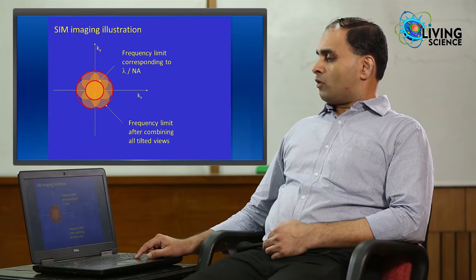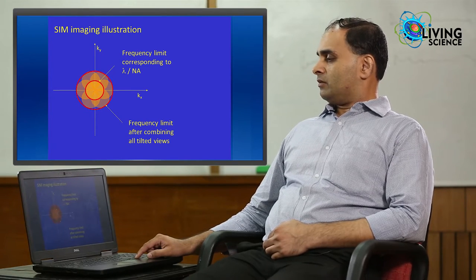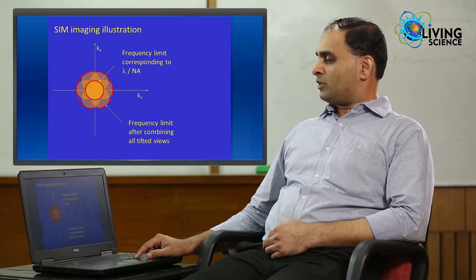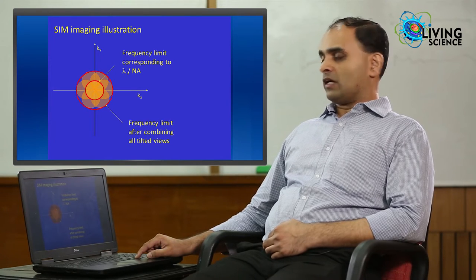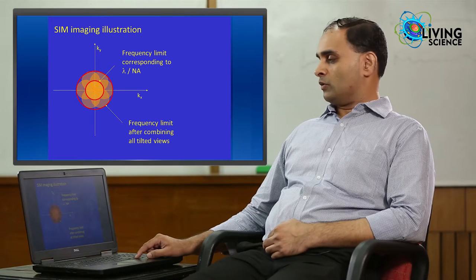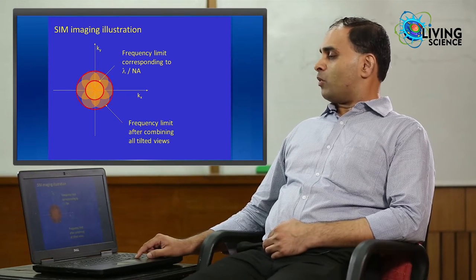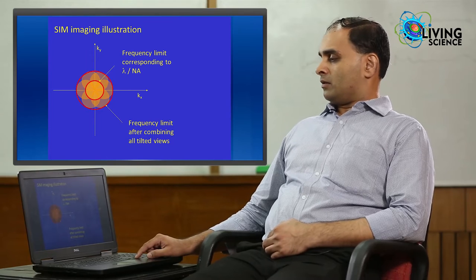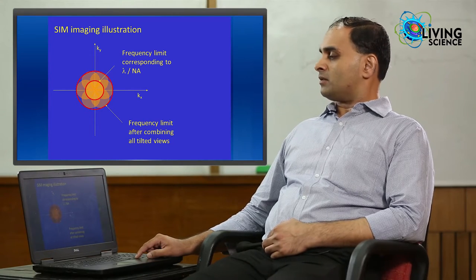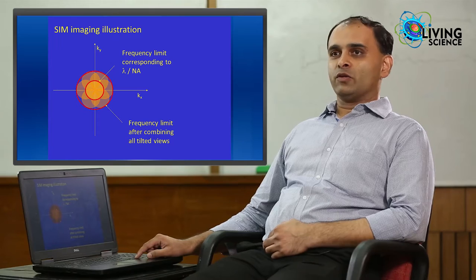If we look at it from Fourier space, we see the inner red circle that corresponds to low frequencies corresponding to diffraction limited resolution whereas, the tilted illumination for example, can provide access to higher frequencies in Fourier space and lead to higher resolution features.